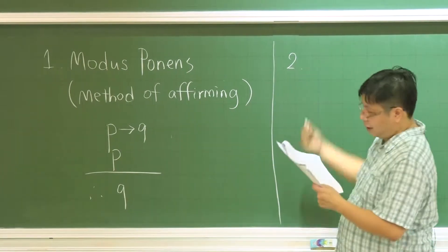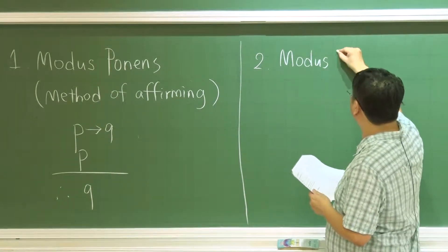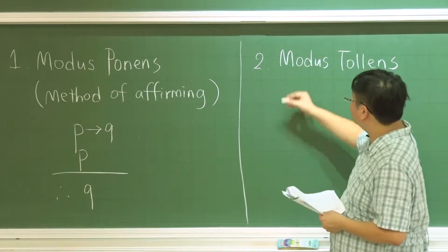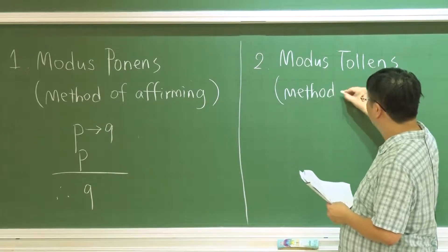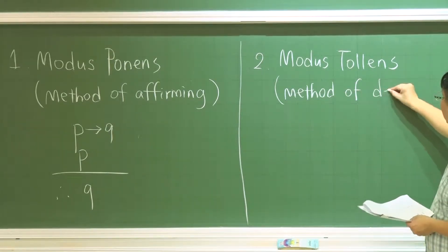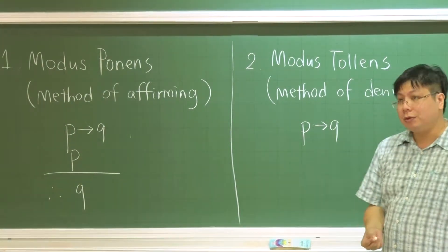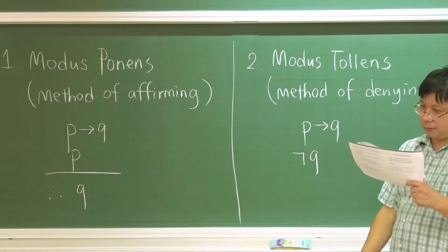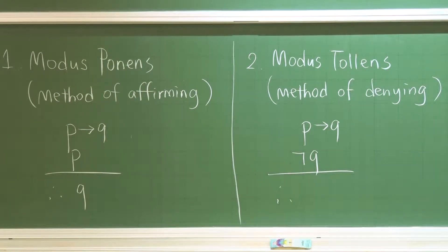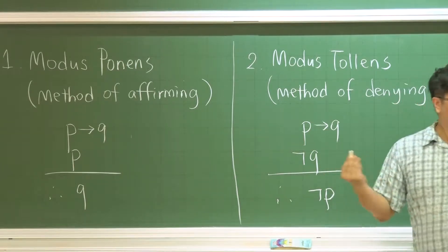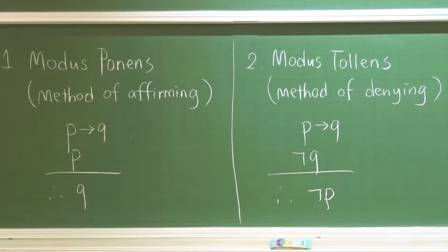The second rule has a similar name: modus tollens, which means the method of denying. We have P implies Q known to be true, but this time we have not Q. For example, if I have eaten the cake, my mouth will be dirty. My mouth is clean, so I didn't eat the cake — this implies not P.